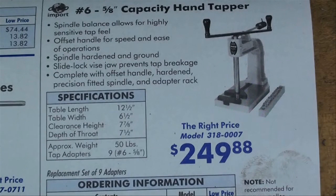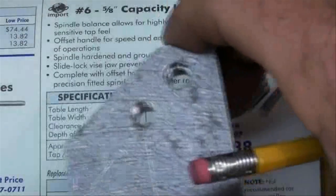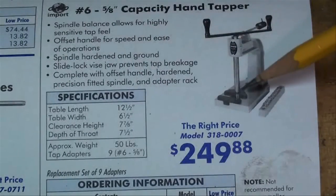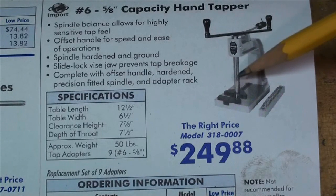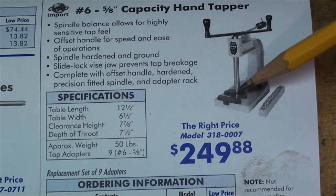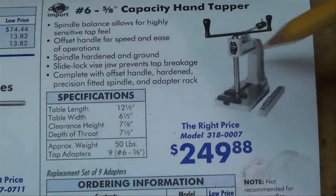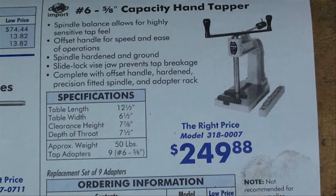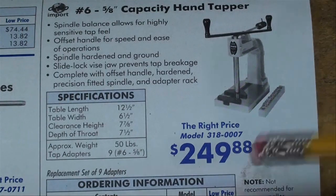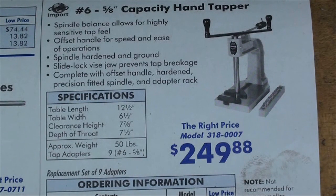This is a page out of the ENCO catalog. And everybody sells one of these. It's called a hand tapping machine. And you put your pre-drilled work on the little table there. And your tap mounted into this bar here. There's a tap wrench on the end of it. And this will move up and down. And it will hold the tap perfectly perpendicular with the work. But as you can see, those are $250 and that's probably not something you're going to see in a home shop. But many commercial shops have these.